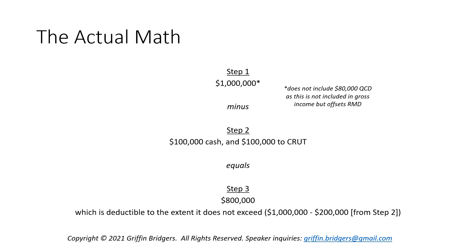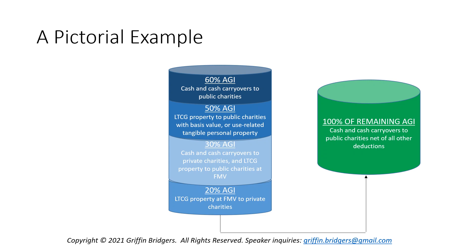This is where the election comes in. In the pictorial view, you start with traditional contributions, walk through the 60%, 50%, 30%, and 20% buckets netting those out, and whatever is left you apply to 100% of remaining AGI after everything in the blue buckets. What's in the green bucket is what you might deduct in the given year, to the extent it doesn't exceed your remaining AGI and to the extent it qualifies as a cash or check payment to a public charity other than a donor-advised fund or supporting organization — and you must be itemizing to even get here.